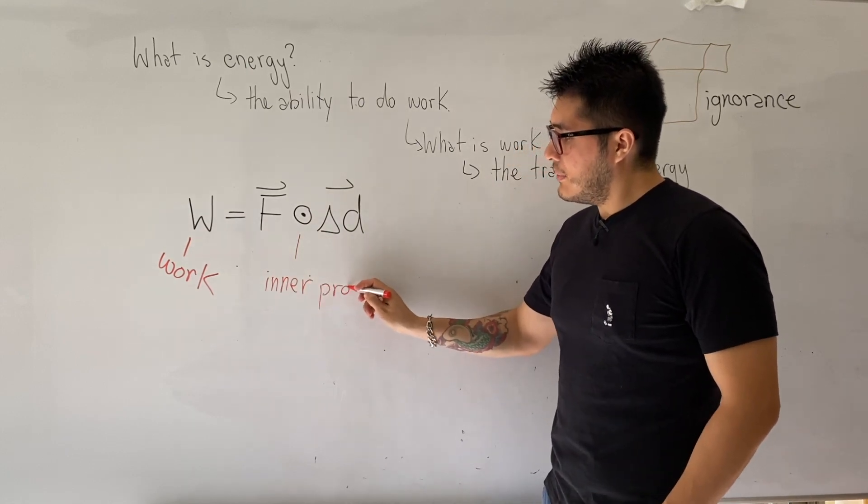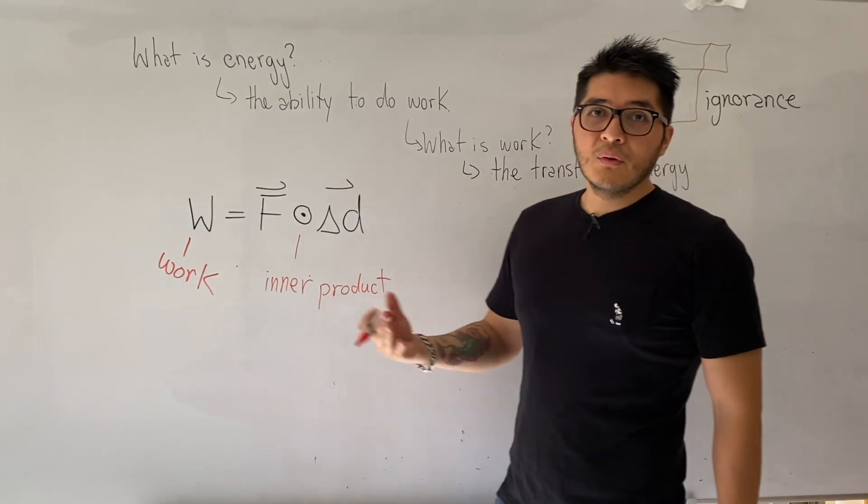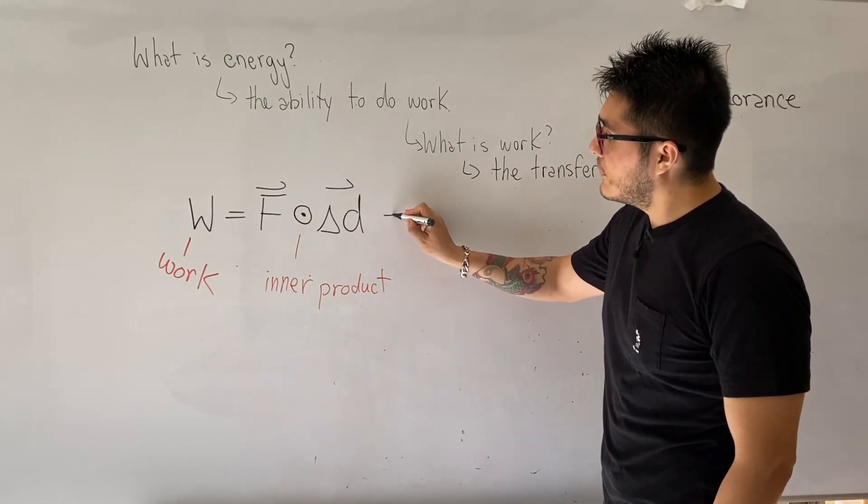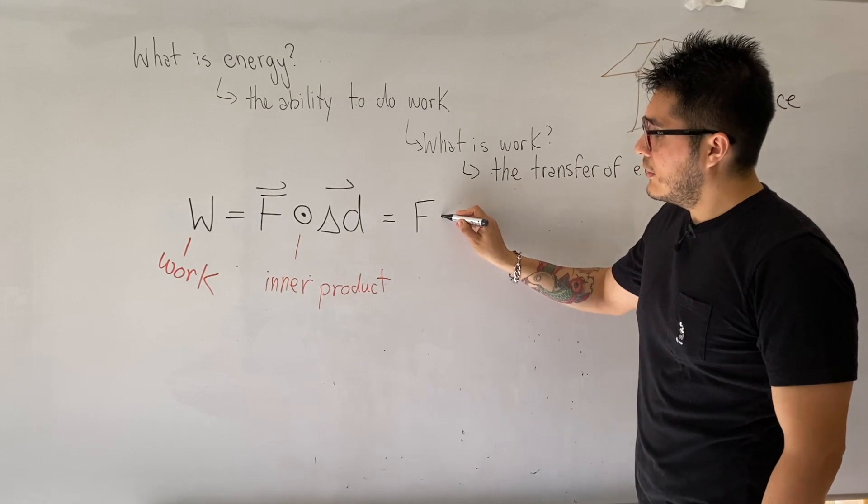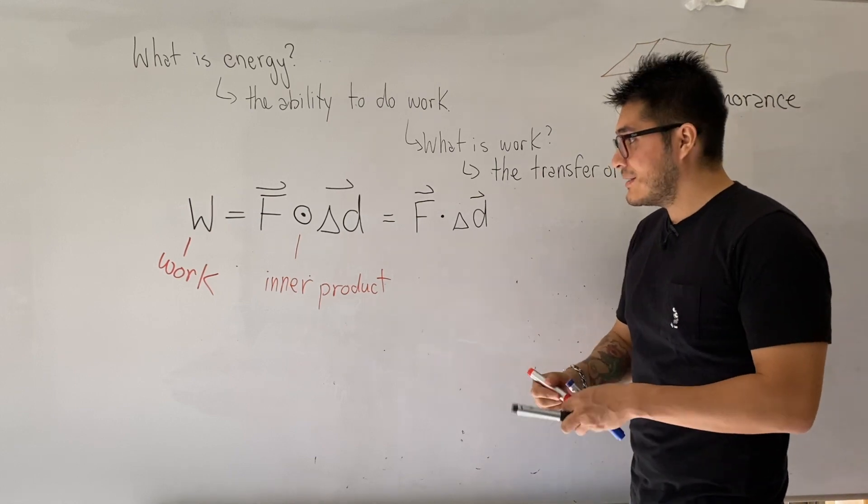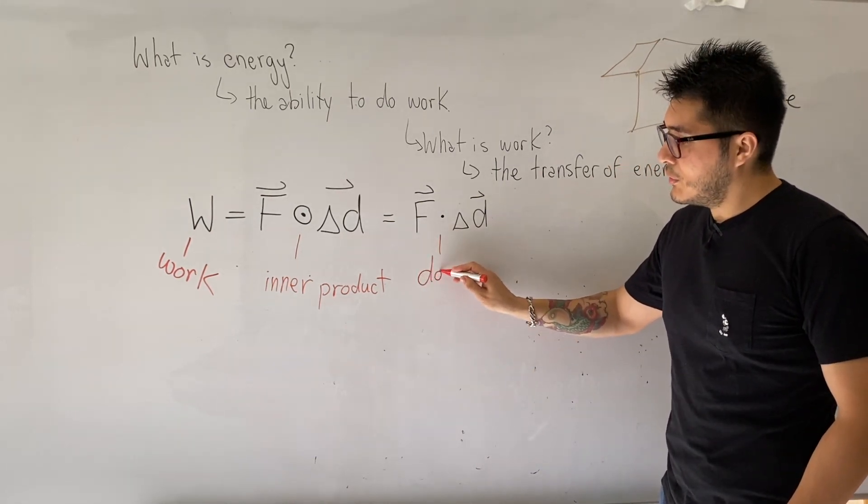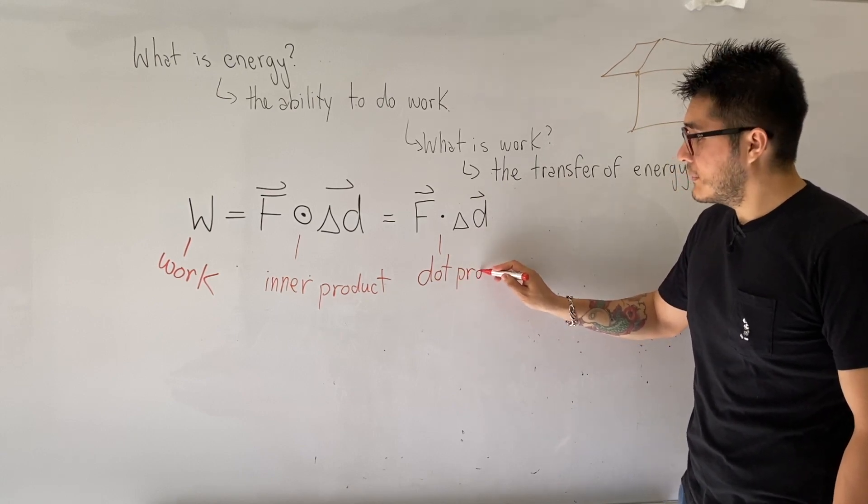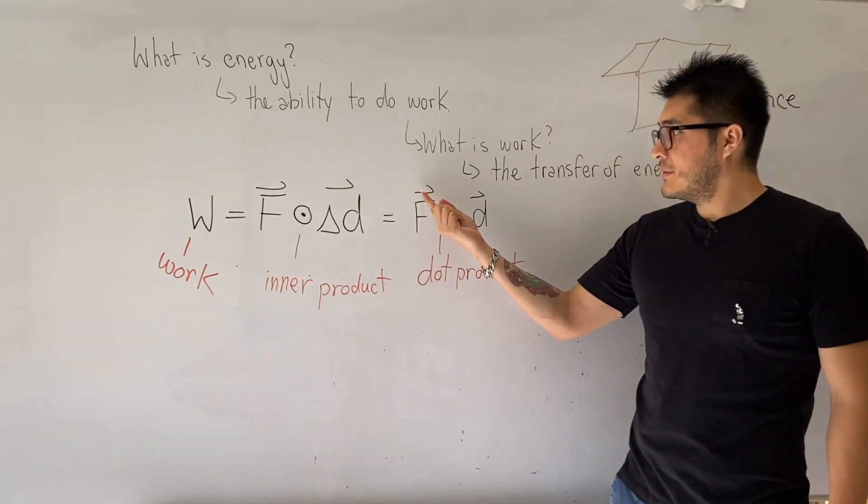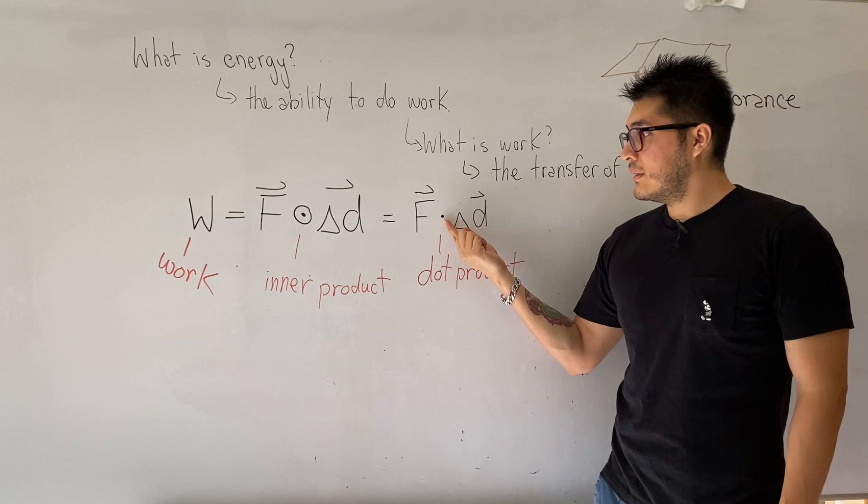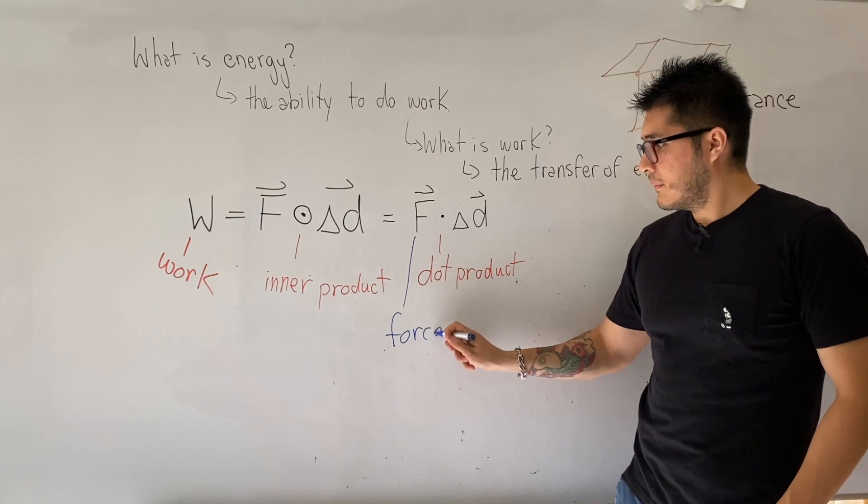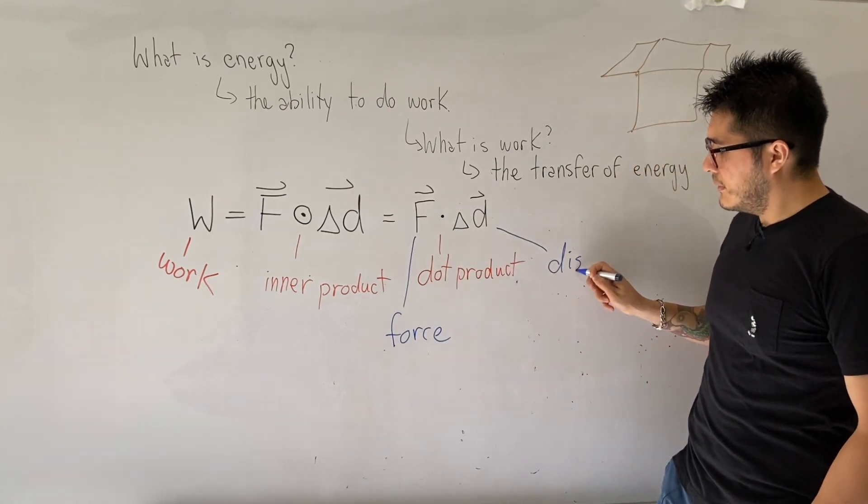This is a vector application, but over time, you know, nobody ever wants to see the inner product. It became too difficult, so to make it more friendly, we're going to define the formula to just be F dot delta D. The inner product is the same thing as the dot product, but the dot product is just more friendly. You may have seen it in your calculus course. The formula for work depends on two vector quantities being dotted together: it depends on the force and displacement.